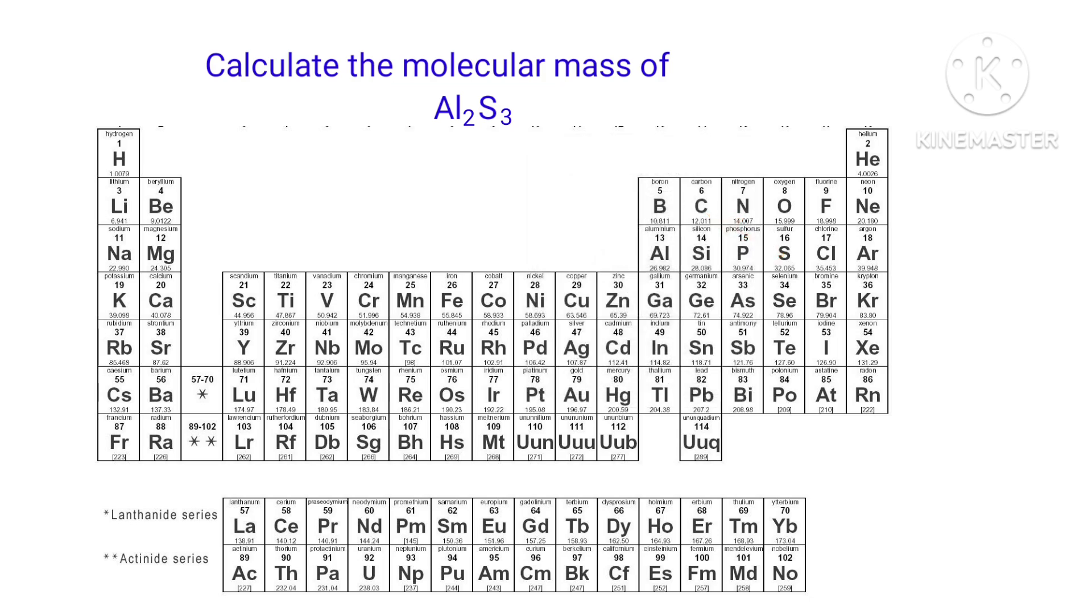In Al₂S₃ there are two aluminium atoms and three sulphur atoms present. So the molecular mass of Al₂S₃ is 2 × 26.982 plus 3 × 32.065, that equals to 150.159 grams per mole.